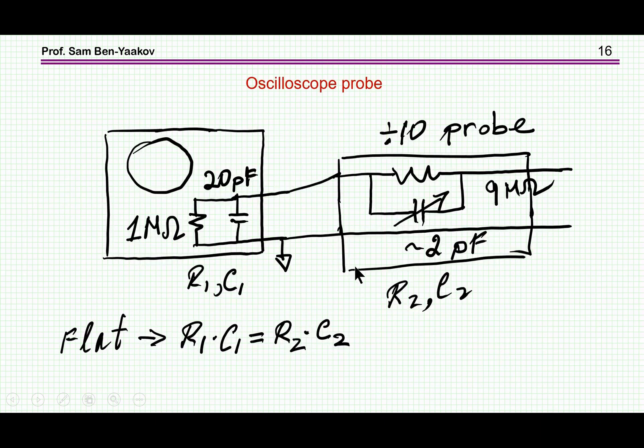This sort of reminds us of, for example, an oscilloscope that has an input resistance of 1 megaohm, 20 picofarad capacitance. And when we connect a probe, like a divide by 10, this would be 9 megaohm, but then we need a capacitor for compensation because we'll get a flat response between input and output when the time constants here are the same. This is why we have a little screw there to adjust this capacitor so as to get the time constant right, and then we're going to get a flat response.